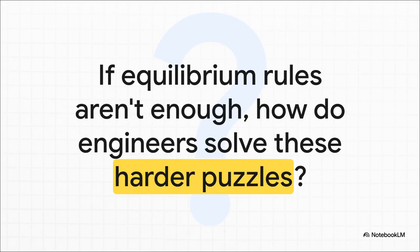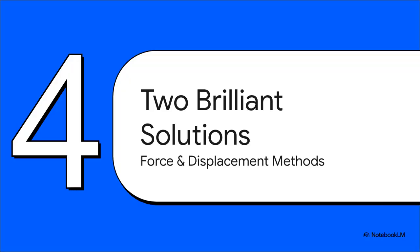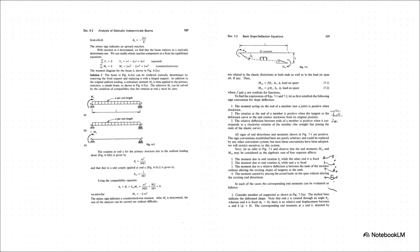So this brings us right back to the big question, doesn't it? If those fundamental rules of equilibrium aren't enough to solve the puzzle anymore, then how in the world do engineers figure out what's going on inside these tougher, stronger structures? Well, to crack these much harder puzzles, engineers came up with two just brilliant solutions. They're called the force method and the displacement method. And again, don't worry about deciphering the math here. The key takeaway is that these are two totally different ways of thinking about the problem. They attack it from completely different angles.